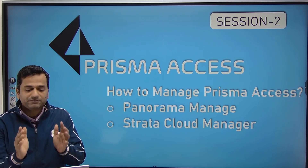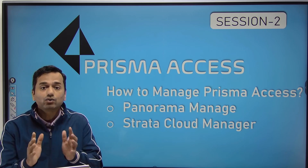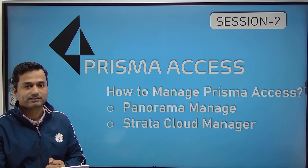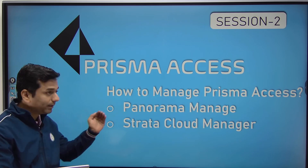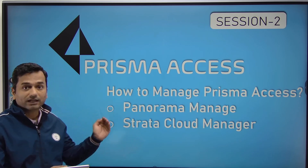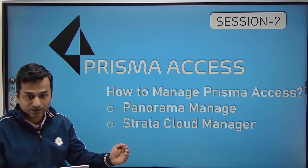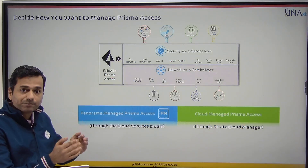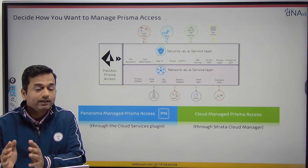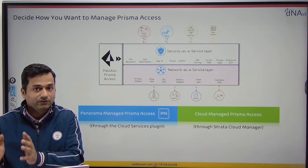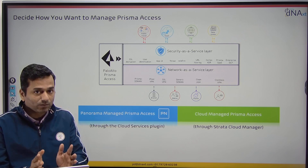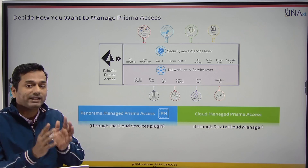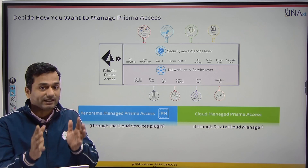Let us today focus on Prisma Access — how to manage Prisma Access. There are two ways to manage Prisma Access. Number one, Panorama Managed. Number two, Strata Cloud Manager. If you already have an on-premises Panorama managing your Palo Alto next-generation firewall, that same Panorama you can use to manage your Prisma Access cloud.